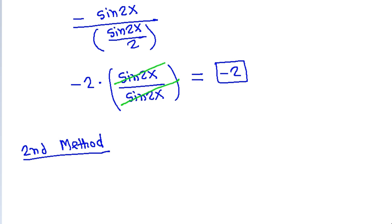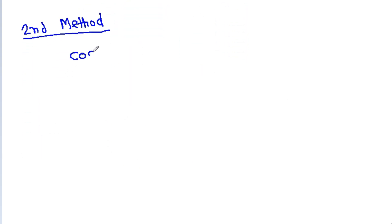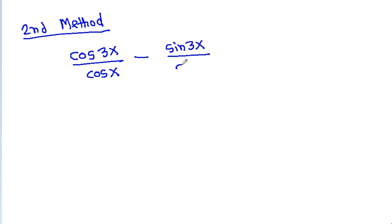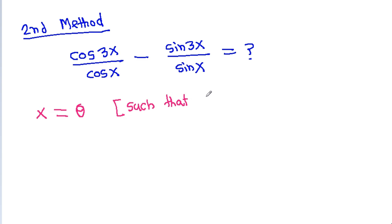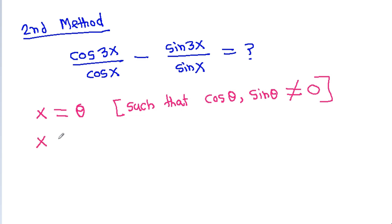For the second method, we have cos 3x by cos x minus sin 3x by sin x. We can simply take x equal to any angle such that cos x and sin x are not equal to zero. So, we can take x equal to 30 degrees.